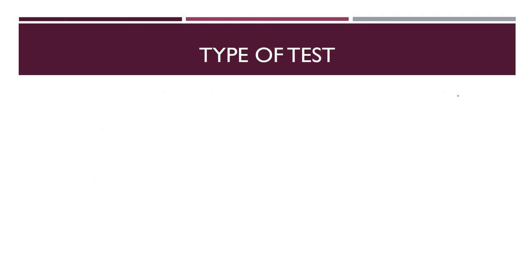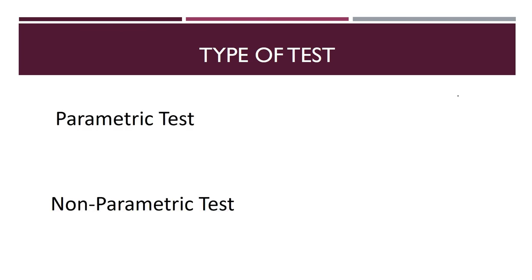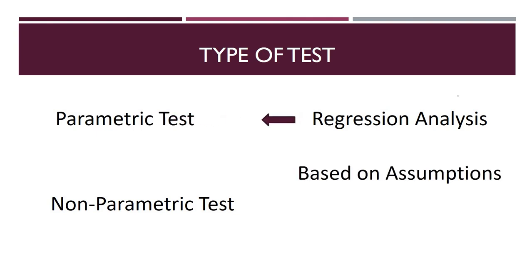Now let's move to the type of test. When doing regression, we have different kinds of tests. Regression analysis comes under the parametric test. Parametric means those tests which are based on certain assumptions, and regression is based on certain assumptions. That's why we classify regression analysis as a parametric test.